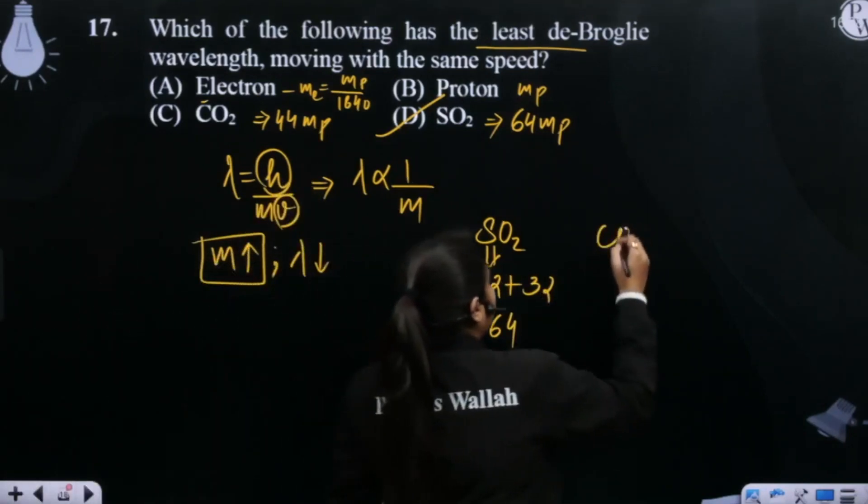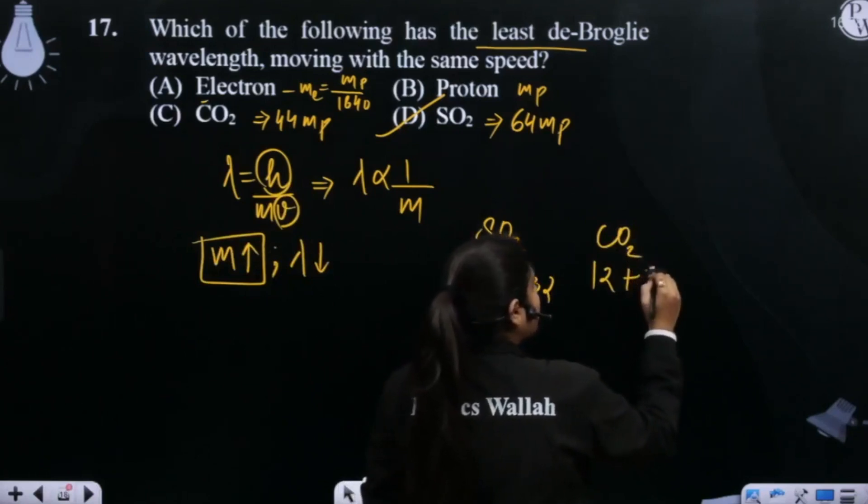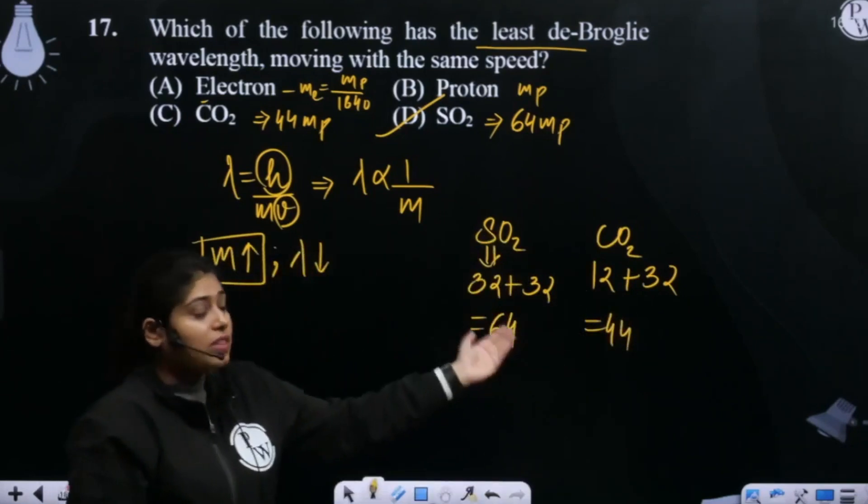So if we calculate the CO2, carbon is 12. How much is this? 44. So this is 44 times heavier than our proton.